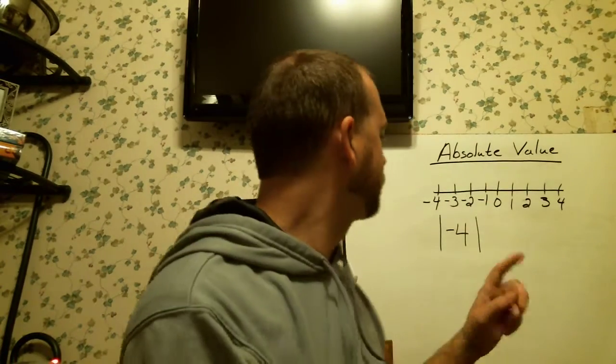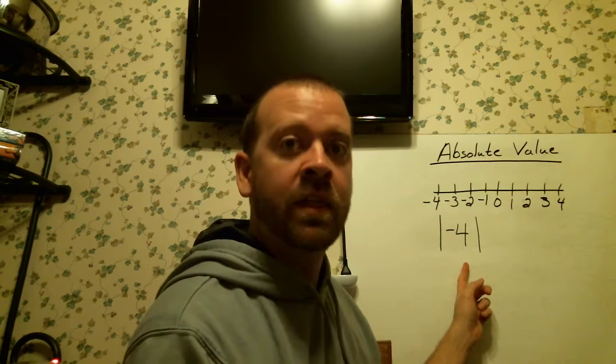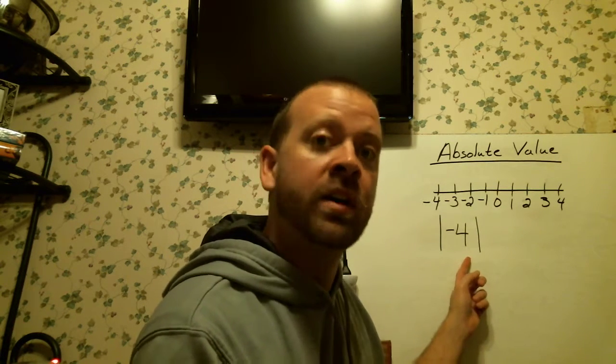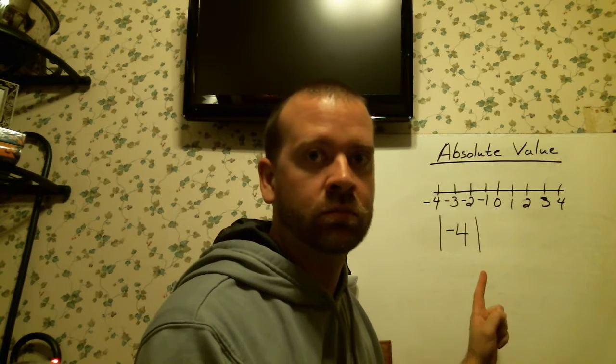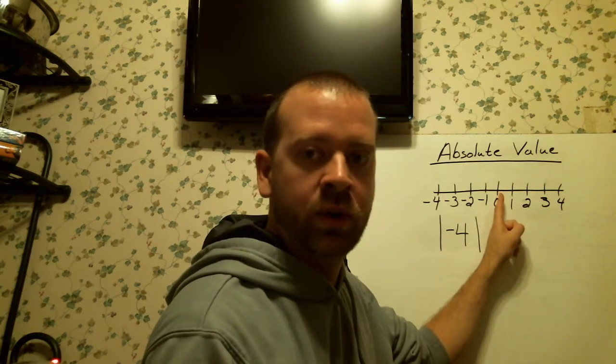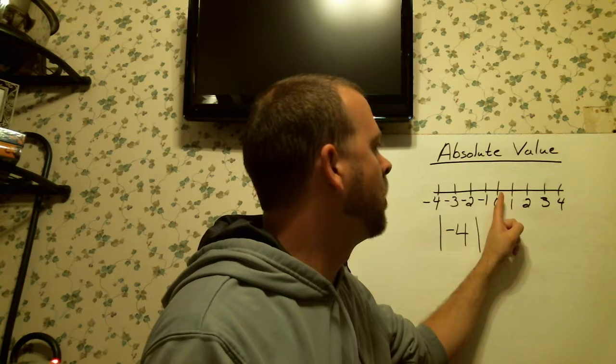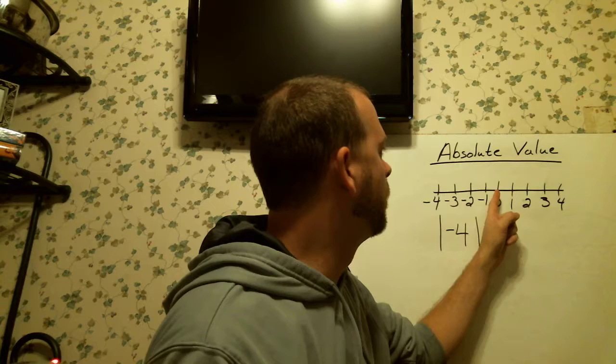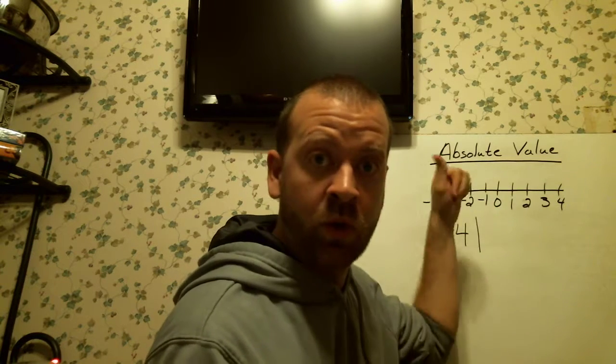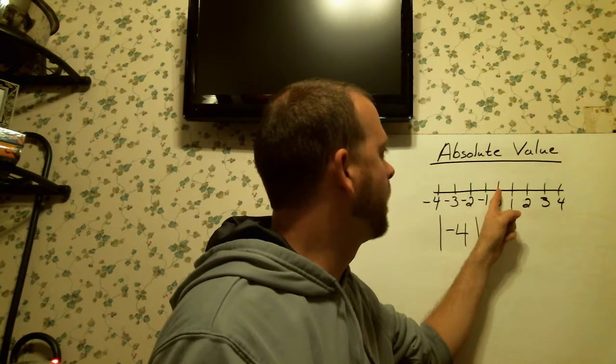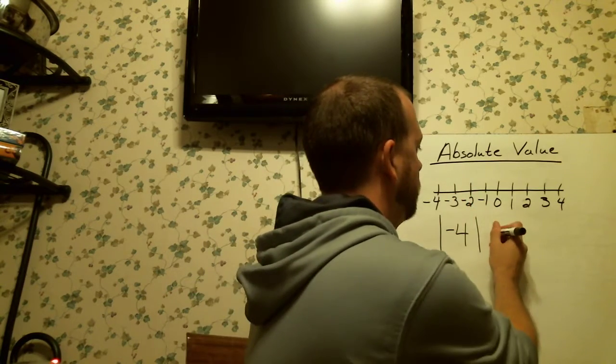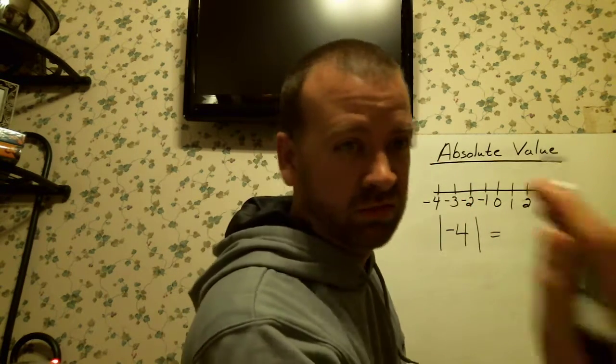So, let's look at this problem. Negative 4. They want to know the absolute value. Well, the absolute value is how far it is on a number line from 0. So, 0 is our starting point. And if we count how far it is from 0, that is our absolute value. It's a negative number, so we know we're going left. So, we count. 1, 2, 3, 4. So, the absolute value is 4.